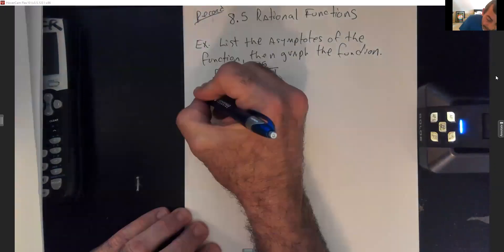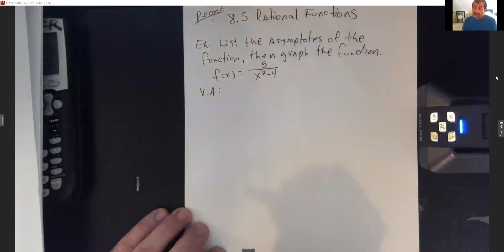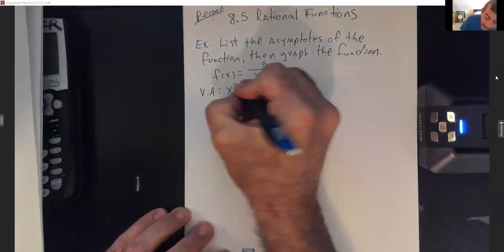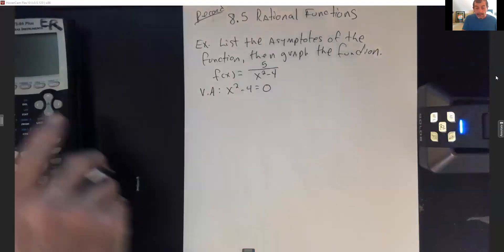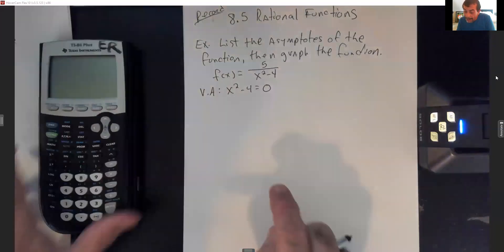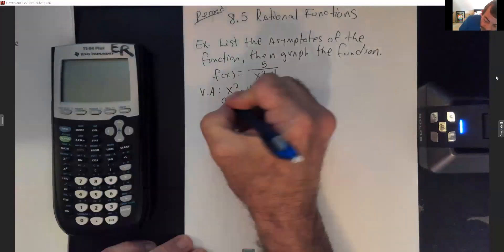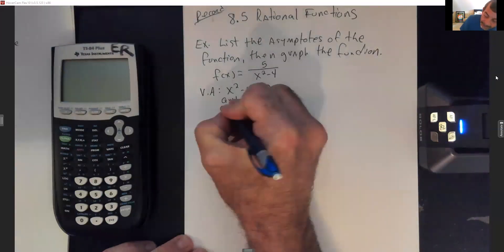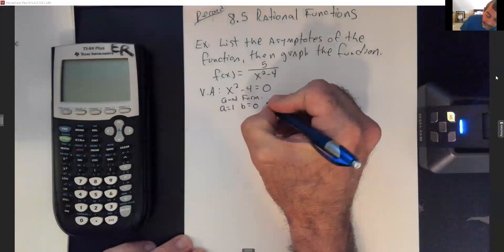I'm going to start out finding my vertical asymptotes first, and then I'll get my horizontal asymptote. To find the vertical asymptotes, we take the bottom and set it equal to zero. Since that's quadratic, I'm going to use the quadratic formula, where a equals 1, b is 0, and c is negative 4.